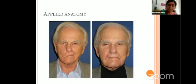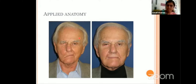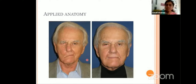Bell's palsy is infranuclear paralysis of the facial nerve. This is right-sided facial palsy. How do we diagnose it? The wrinkles on the forehead are lost on the right side. The patient is unable to close their eyes because orbicularis oculi is paralyzed. The nasolabial furrow is lost. When the patient tries to smile, the angle of the mouth is deviated to the affected side. These are the features of Bell's palsy. Bell's palsy is usually self-limited and recovers on its own — complete recovery occurs.